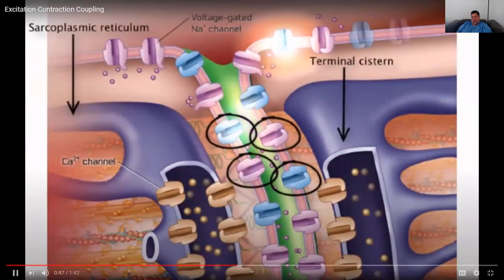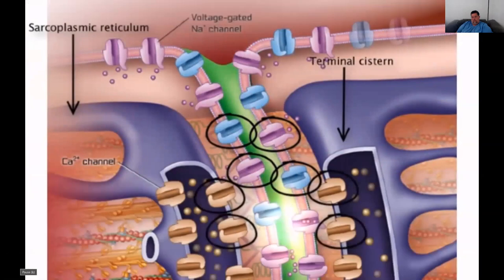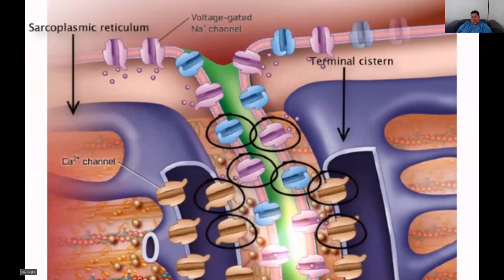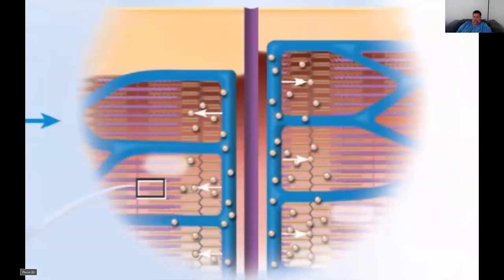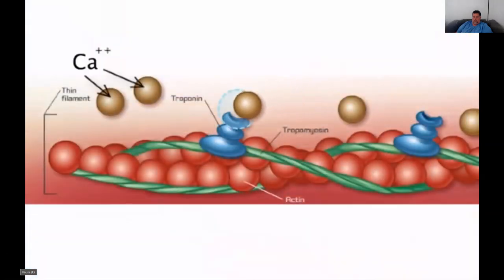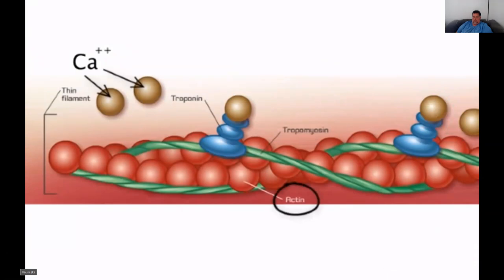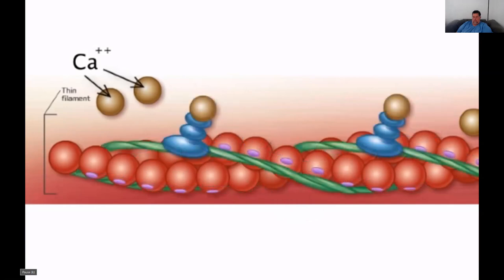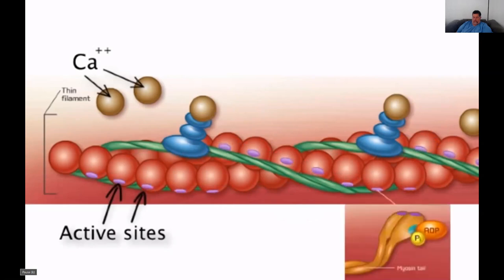The action potential stimulates the opening of voltage-gated ion channels in the T-tubules, which are physically linked to calcium channels in the terminal cisternae of the sarcoplasmic reticulum. These calcium channels open as well. Since calcium ions are in higher concentration in the sarcoplasmic reticulum than in the sarcoplasm, they diffuse out into the cytosol. The calcium ions then bind to the troponin of the sarcomere's thin filaments, causing the troponin-tropomyosin complex to change shape, move into a groove on the actin, and expose active sites for myosin head binding.